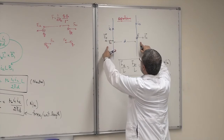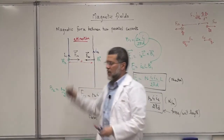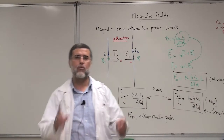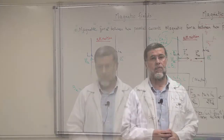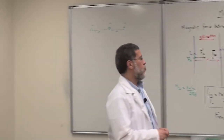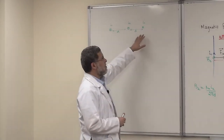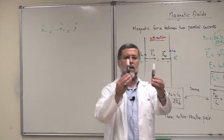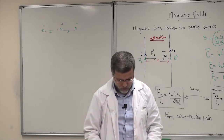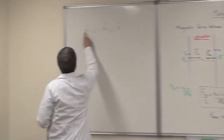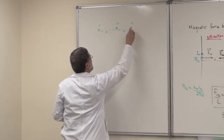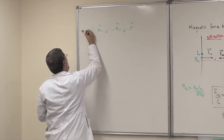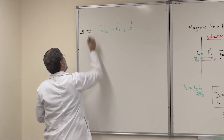To summarize: attraction when currents are in the same direction, repulsion when currents are in opposite directions. Later we will solve problems from exams related to this topic. We can even have three or four wires. Let me show you the three-wire case. This is called the side view. You can also have a top view — looking down at the wires — where a dot means current out of the page and a cross means into the page. It's important to understand this distinction.